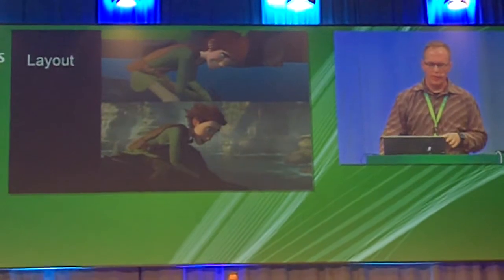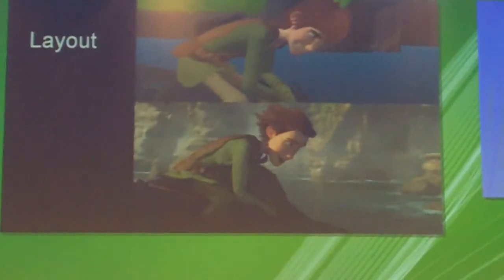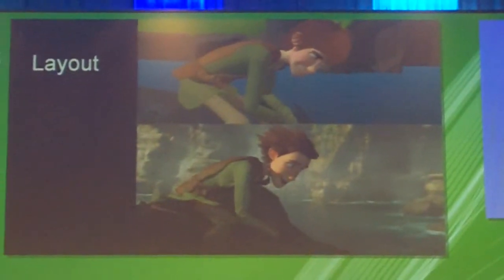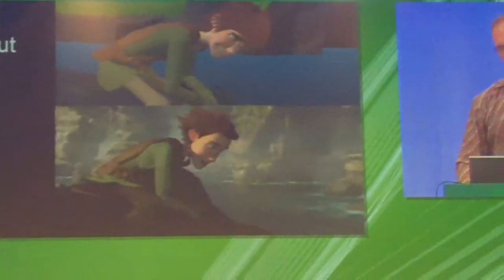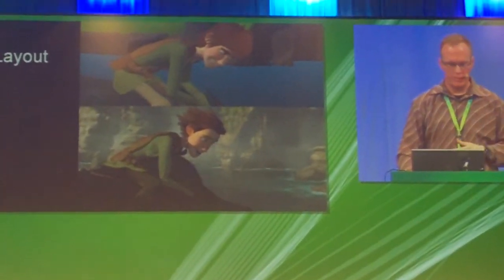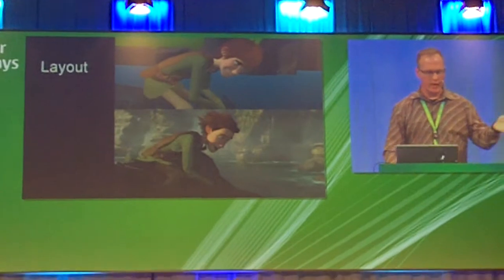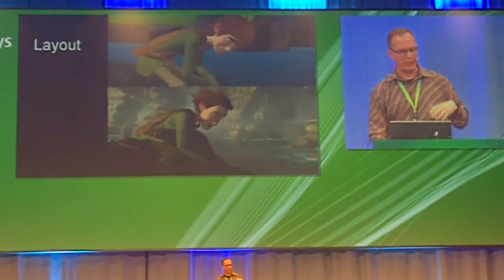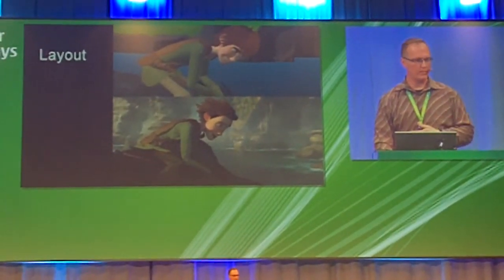Layout is the stage where the assets are arranged in the scene, and where the starting and ending positions of the characters are established. Layout is also where much of the cinematography is done, which involves setting the camera positions and camera movement for each of the shots. Here we see a frame in the layout stage on the top, and then that same frame at the bottom after the surfacing, lighting, and effects have been applied.